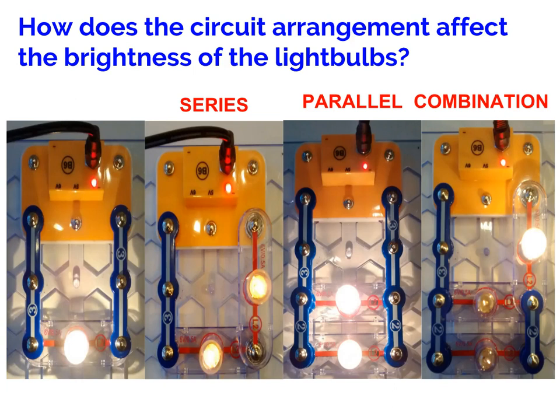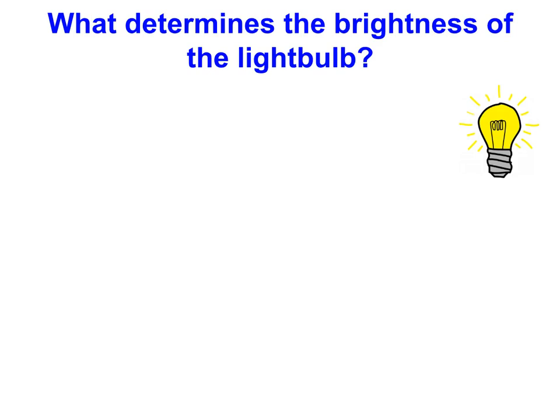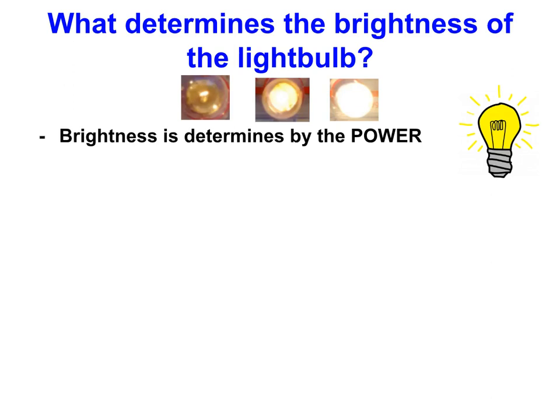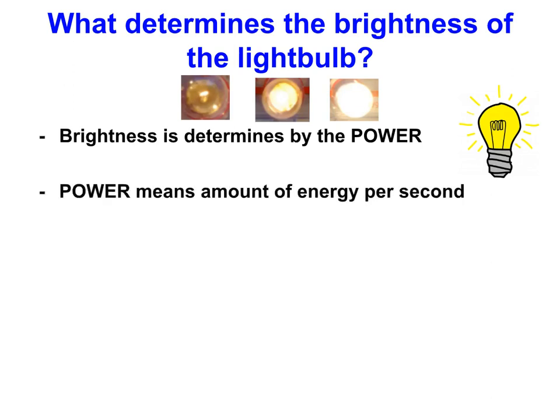Today we are going to figure out the answers to our question. The first question — what determines the brightness of the light bulb — is actually quite easily answerable. The brightness is determined by one thing and that is the power. Power means the amount of energy per second that the light bulb absorbs and converts into radiant energy — the light — and a lot of thermal energy, the heat.